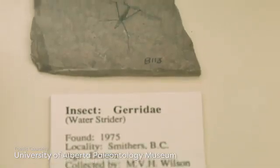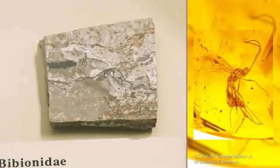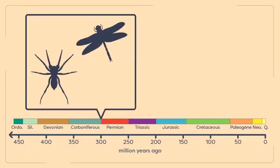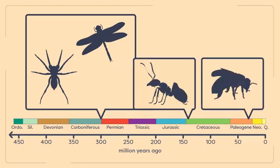Insect fossils may be found as impressions in solid rock or as preserved specimens in amber. Here, for example, we have an impression possibly of a March fly, while beside it we have a wasp preserved in amber, just like you may have seen in the 1993 movie Jurassic Park. Although some arthropods, like dragonflies and true spiders, look much like they did when they first appeared 300 million years ago, many modern arthropods evolved much more recently. Ants, for example, evolved 140 million years ago, while honeybees evolved as recently as 34 million years ago.